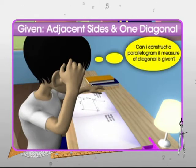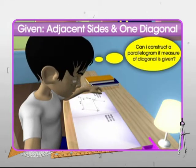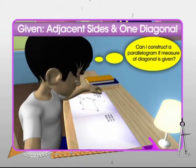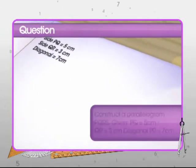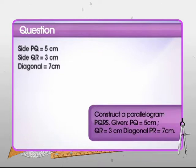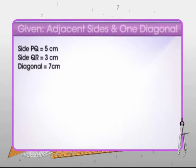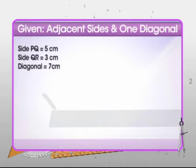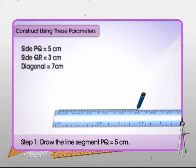Johnny wonders: can he construct a parallelogram when measurements of the adjacent sides and a diagonal are given instead of an angle? Let's see. We need to draw a parallelogram with sides of length 5 centimeters and 3 centimeters respectively, and a diagonal measuring 7 centimeters. First, draw the side of length 5 centimeters with the help of the ruler. Let's call it PQ.